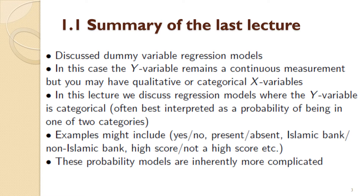By way of a summary of the course so far: we've discussed dummy variable regression models, and we'll give more examples next week. In those models, the Y variable remains a continuous measurement but you might have qualitative or categorical X variables. In this lecture, we discuss regression models where the Y variable itself is categorical. This looks a bit different, but it's often best interpreted as the Y variable being a probability of being in one of two categories.